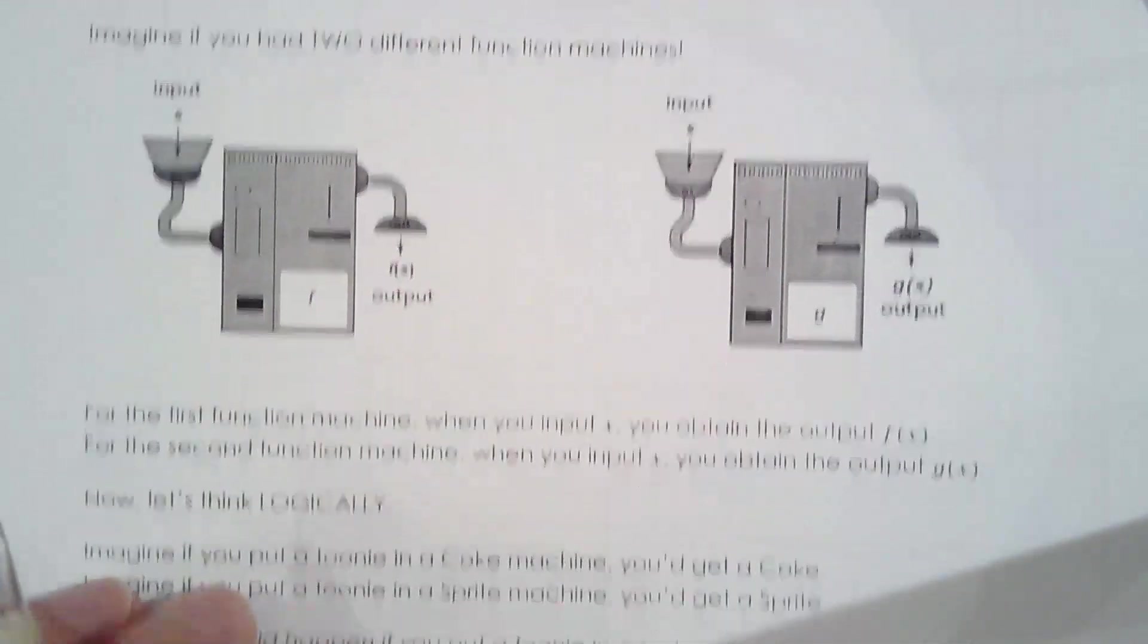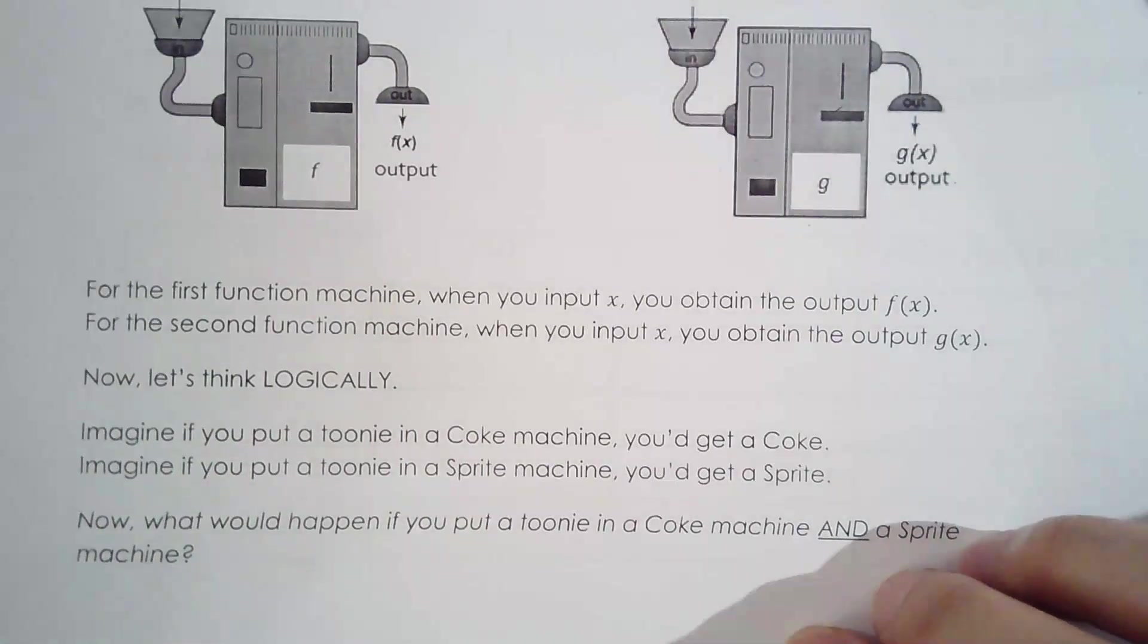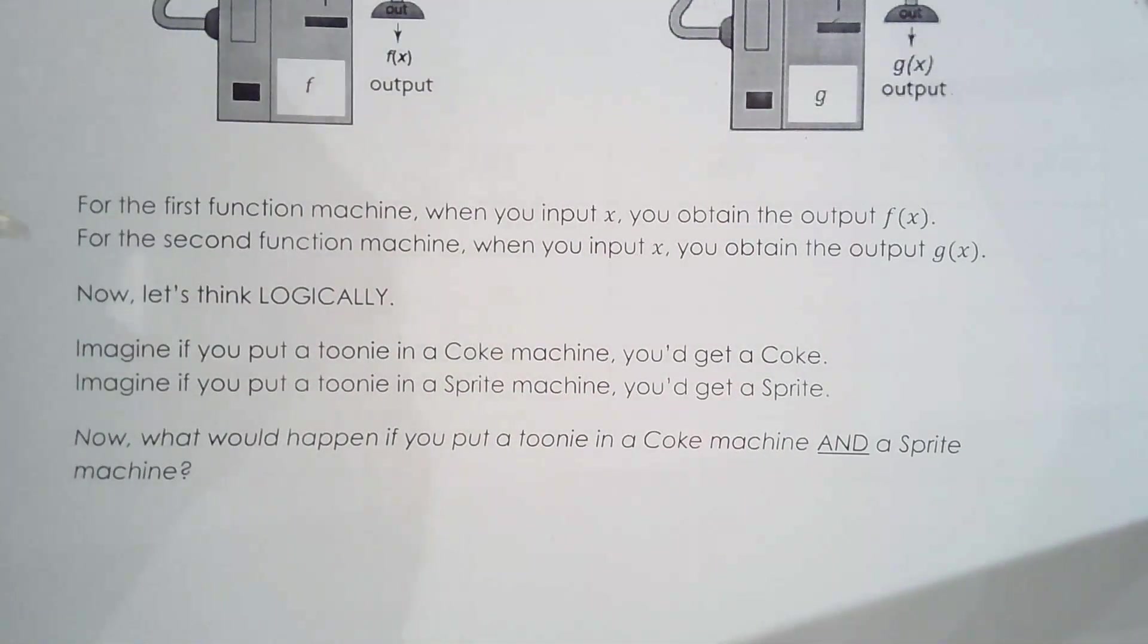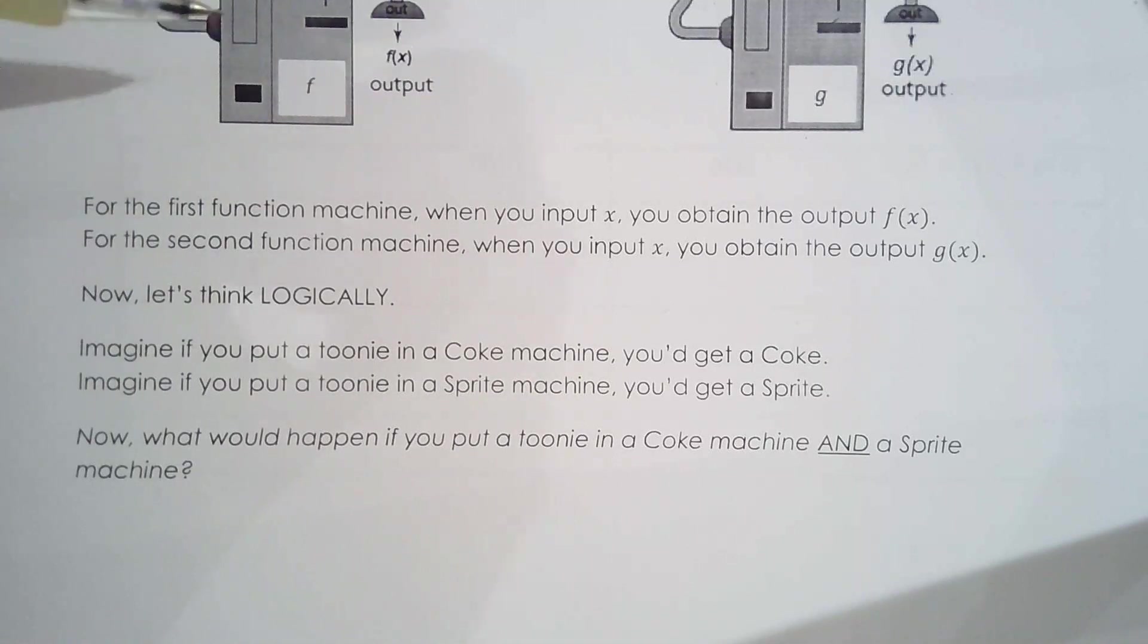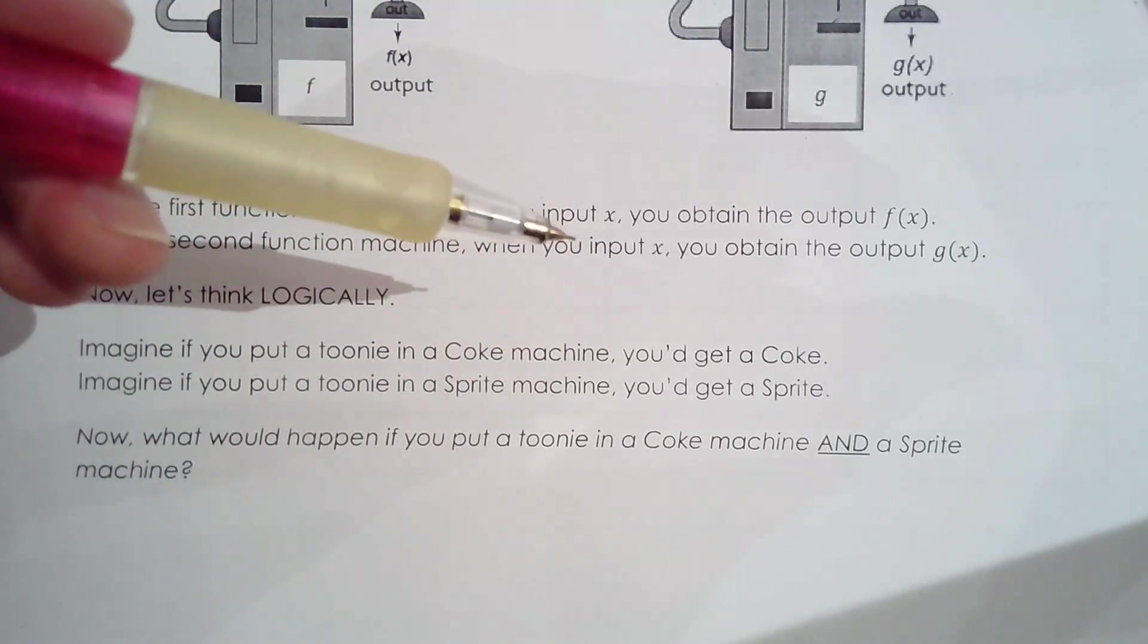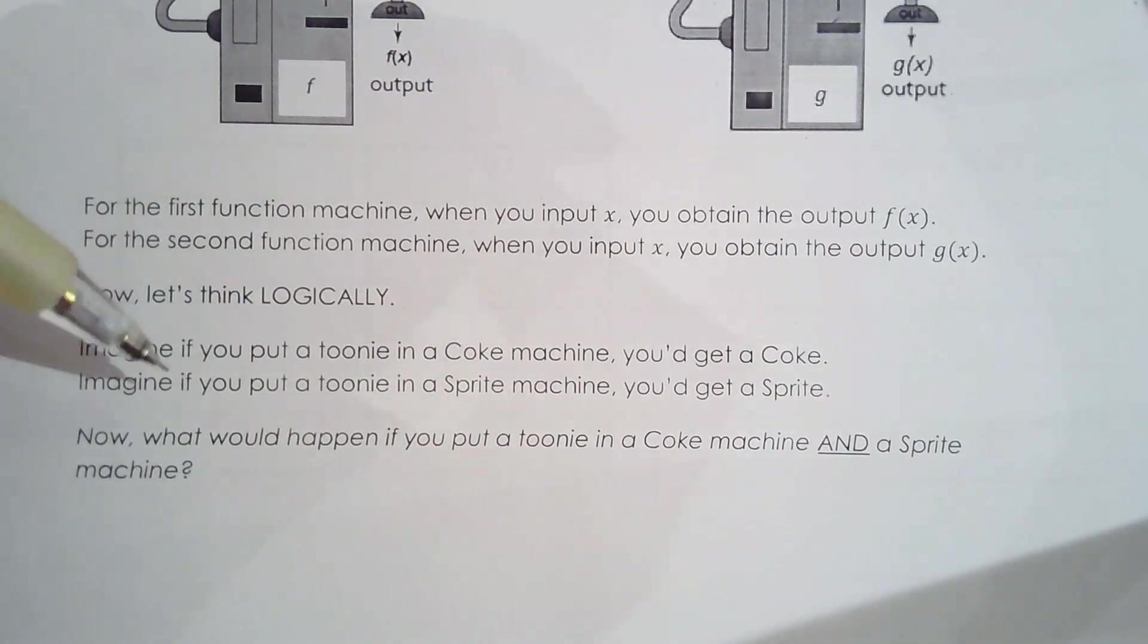Without going into the big idea of this lesson, think of this like a Coke machine and a Sprite machine. If I put a toonie in a Coke machine, I get a Coke. If I put a toonie in a Sprite machine, I get a Sprite. What happens when you put a toonie in a Coke machine and a Sprite machine? If you did that, that's essentially adding the two functions together. If you put a toonie in a Coke machine and a Sprite machine, you'll get a Coke and a Sprite.